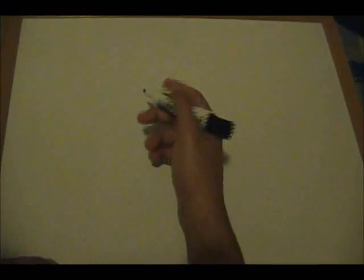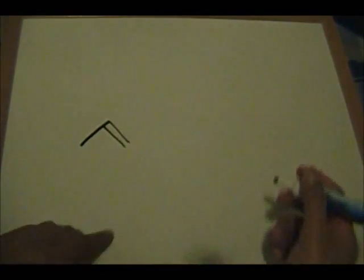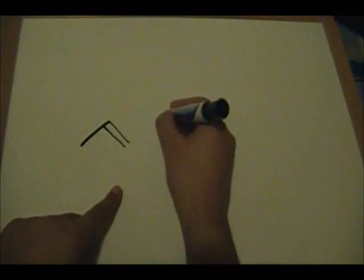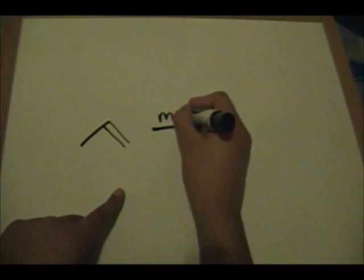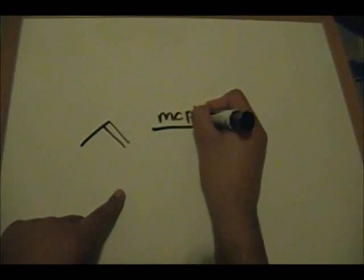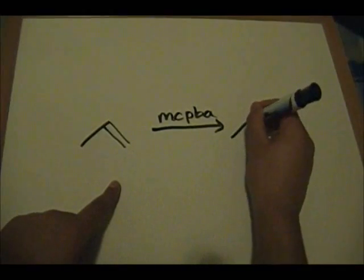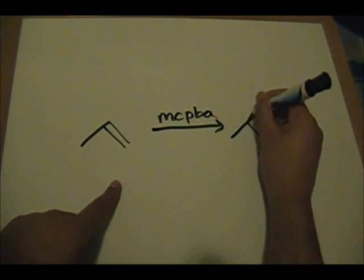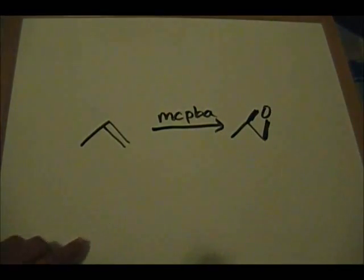So let's get to it. If we have an alkene like this, and we react it with MCPBA, the product of this will be your epoxide.